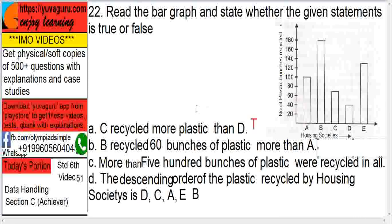Statement B: B has recycled 60 bunches of plastic more than A. Here B is 180 and A is 100, so 80 bunches. So this is false.